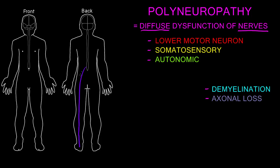The myelin — and I'm drawing this large here, though in reality it's microscopic — these little areas of myelin form the myelin sheath on the axons of nerves in the peripheral nervous system, and that is the main thing being affected by the disease causing the polyneuropathy.